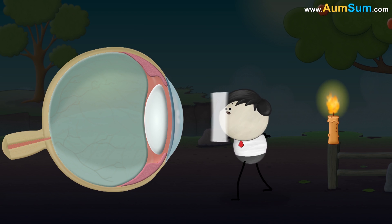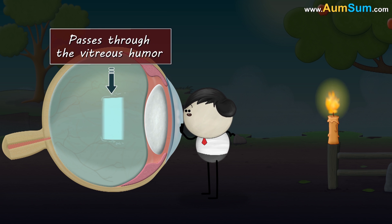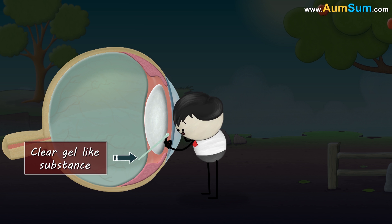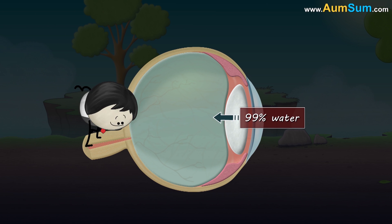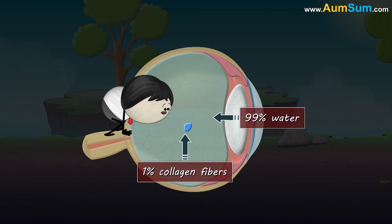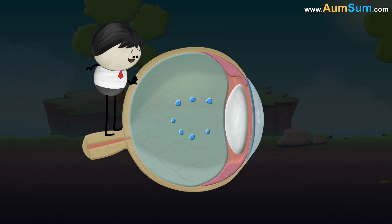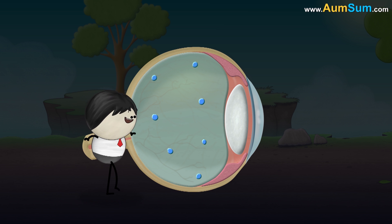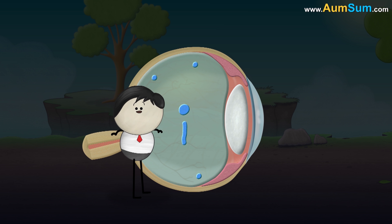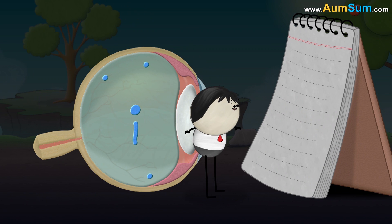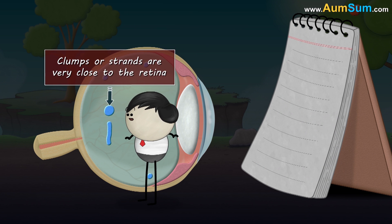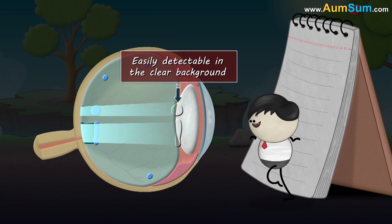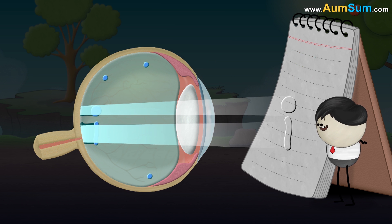When light from an object enters into our eyes, it passes through the vitreous humor to form an image on the retina. Vitreous humor is a clear gel-like substance — 99% water and 1% collagen fibers. These collagen fibers are spread evenly throughout the vitreous humor. But sometimes these fibers tend to come together forming clumps or strands. When we look at a clear sky or a blank page and the clumps or strands are very close to the retina, they cast a strong shadow on the retina, making them easily detectable and thus forming eye floaters.